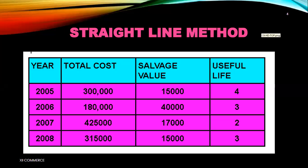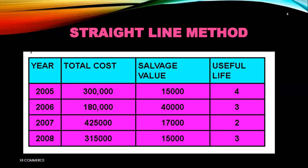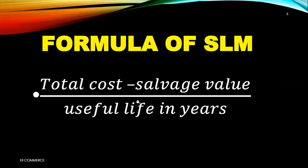Today's lecture is about depreciation and fixed asset accounting. We are starting with the first method: the straight line method. We have data for 2005, 2006, 2007, and 2008 — total cost, salvage values, and useful life are all given. We have to calculate the depreciation using the straight line method. The formula is: total cost minus salvage value, divided by useful life.